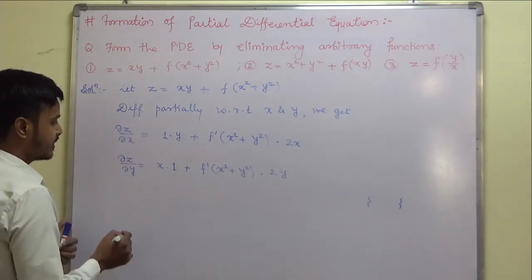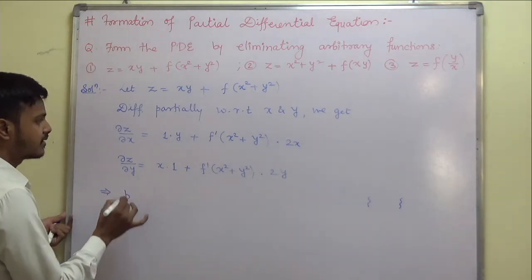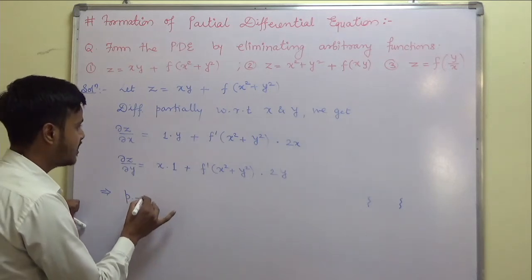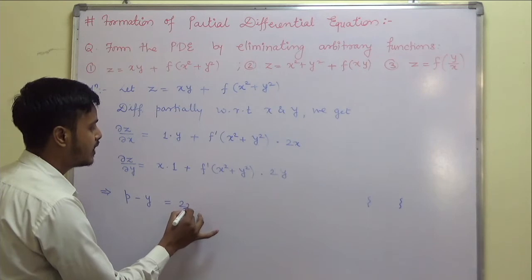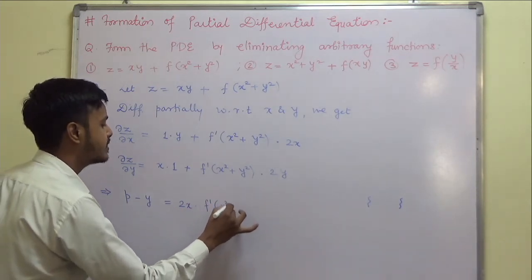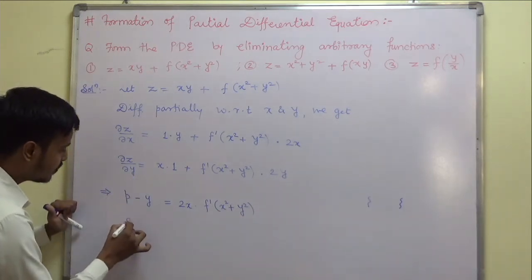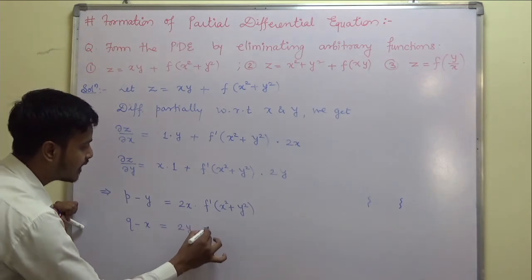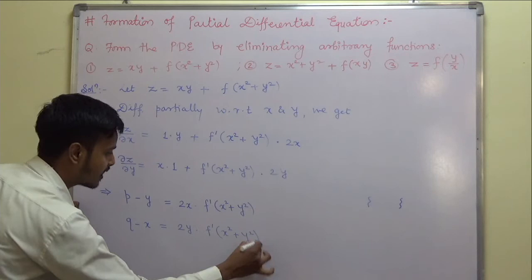Now, del z by del x means p. Taking y to the left side, this gives p minus y equals 2x times f prime of x squared plus y squared. Similarly, del z by del y is q, so q minus x equals 2y times f prime of x squared plus y squared.